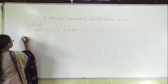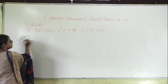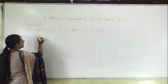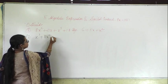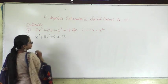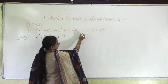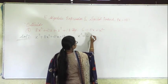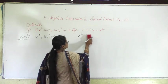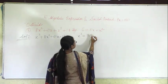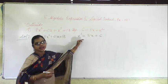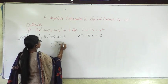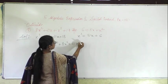As you can see, this is not arranged according to degree. So first we will arrange it according to degree. We can write it as x cubed plus 8x squared plus 21x plus 18. This is the standard form of writing. And for the divisor, 6 plus 5x plus x squared, we can write it as x squared plus 5x plus 6.